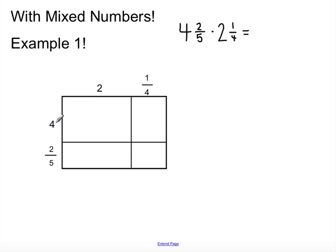I already have it set up. I have the 4. I'm breaking it up into whole numbers and fractions. So, 4, and then 2 fifths, and 2 and the 1 fourth. If you add those sides together, you get these numbers up here. So, we're going to start small. 4 times 2 is 8.